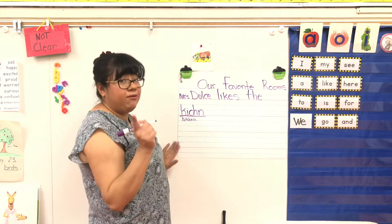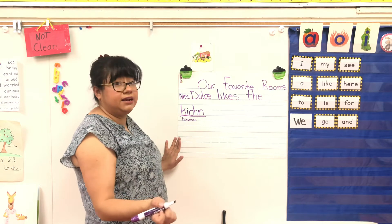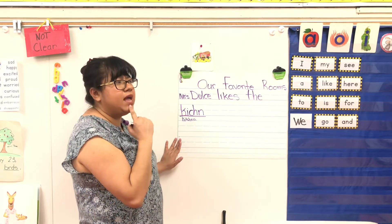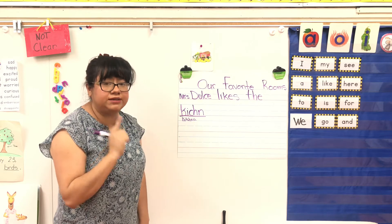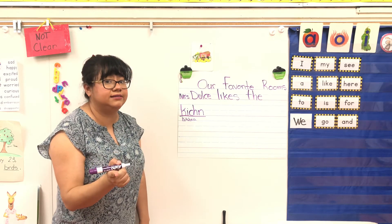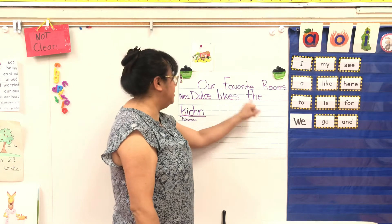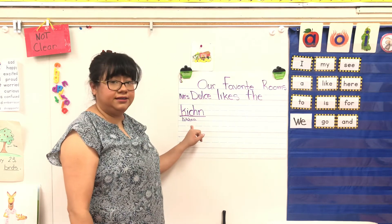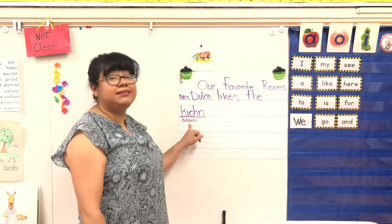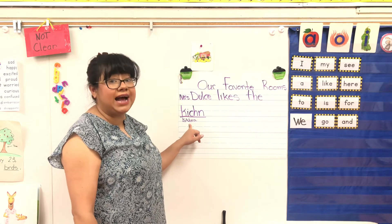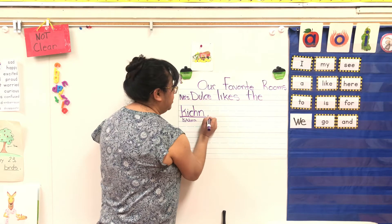Remember, I want to know what your ear can hear. So what do we do at the end of a sentence? Is this an asking sentence or is it a telling sentence? Miss Dulce likes the kitchen. Very good. It's a telling sentence. I am telling you what I like. So I'm going to use a period.